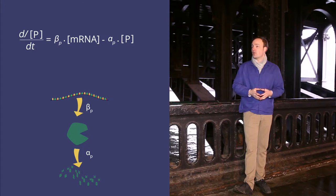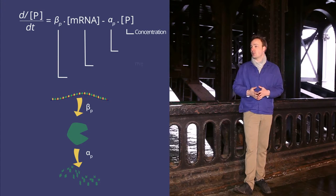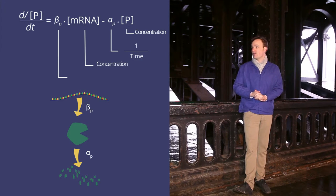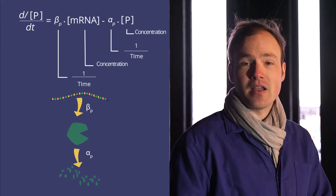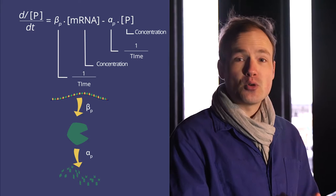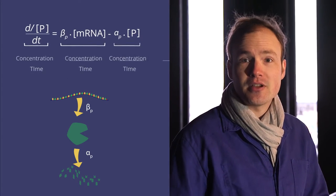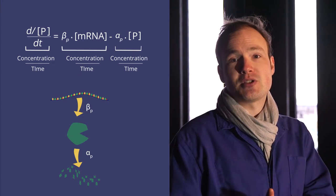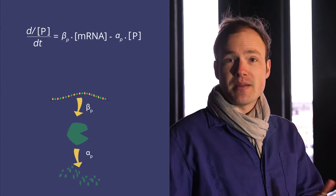Like always, we're keeping in mind our physical units. p has units of protein concentration. Alpha p has units of one over time. mRNA has units of mRNA concentration. And beta p has units of protein per mRNA per time. Note how when you multiply them out, each of our terms has the same units: proteins per time, proteins per time, proteins per time. We know we're allowed to add and subtract them because they're all the same thing.